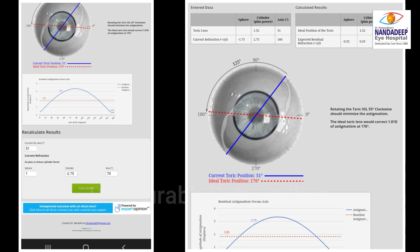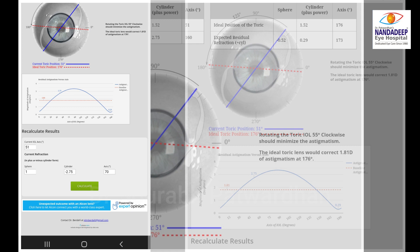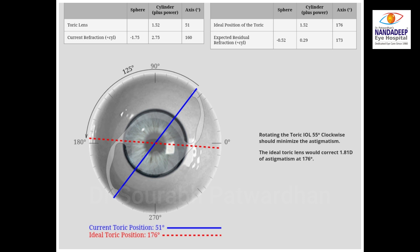So basically the IOL had rotated to 51 degrees from the intended axis of placement. One reason for this rotation can be the large anterior chamber depth and probably a bigger capsular bag in this particular eye.